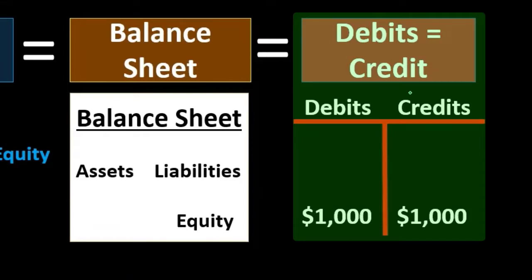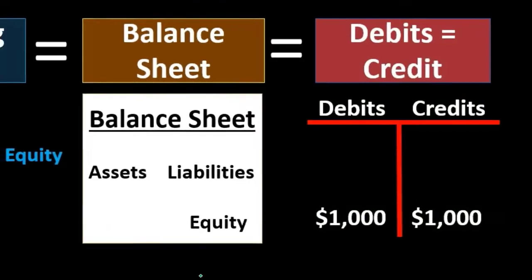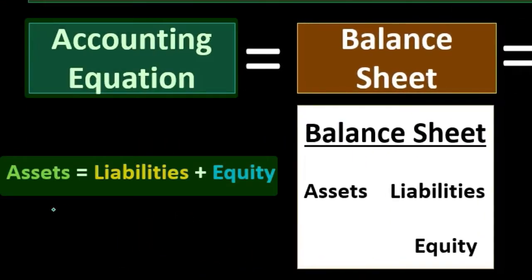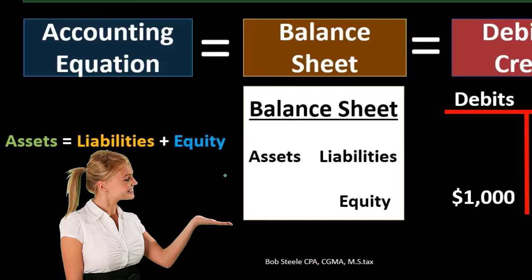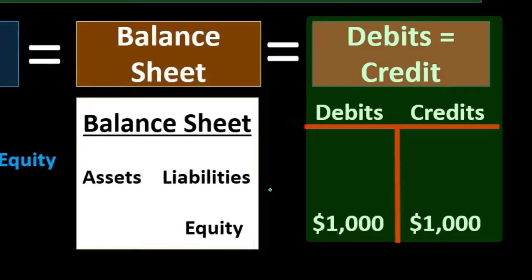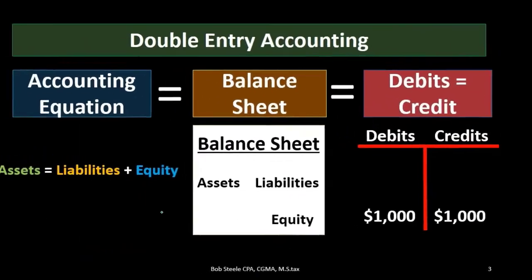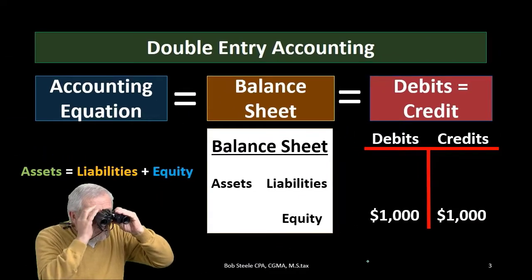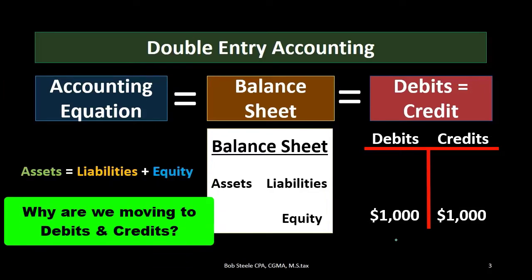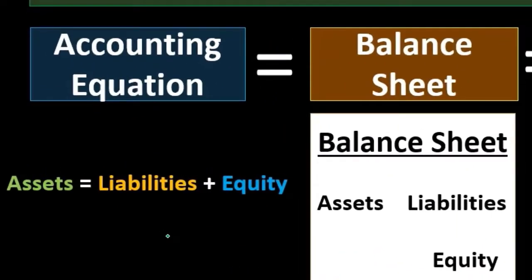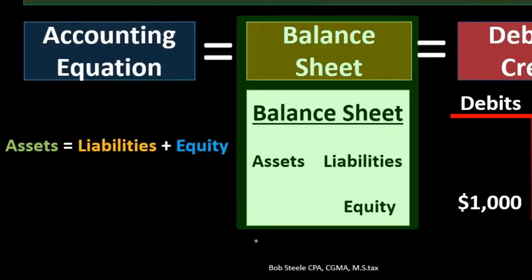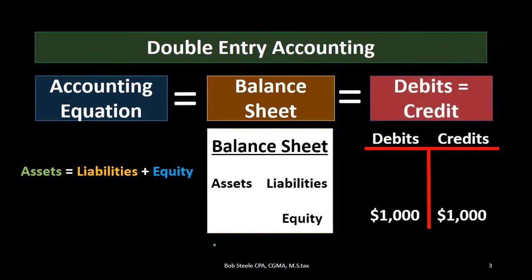When we move to debits and credits, oftentimes when learning accounting we learn the accounting equation first because it's a nice simple equation. Then we typically look at the financial statements before we start creating them with debits and credits. After having looked at the double entry accounting system in terms of the accounting equation, it's very natural to ask why we're moving to debits and credits when the balance sheet and all financial statements do not have debits and credits in them.